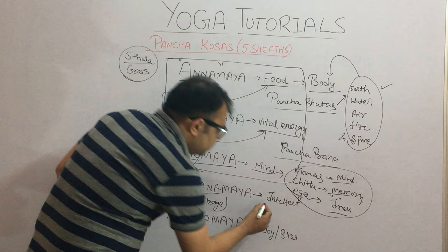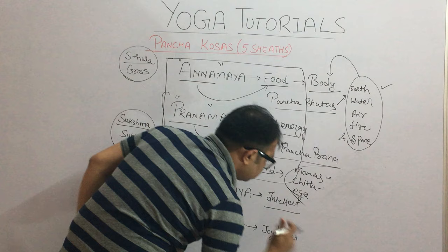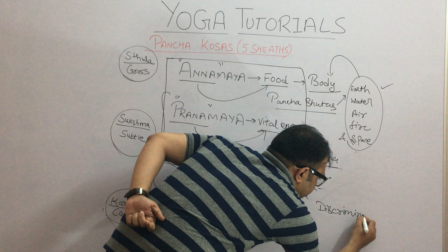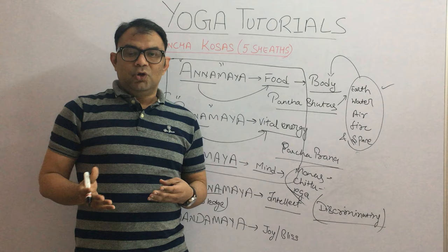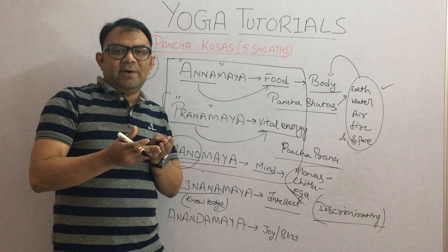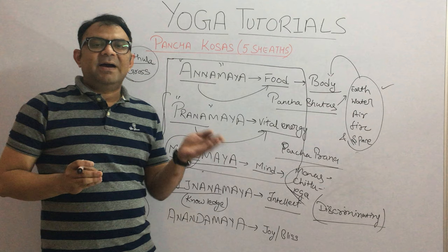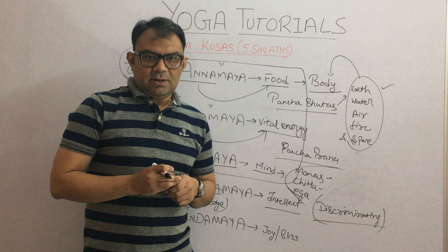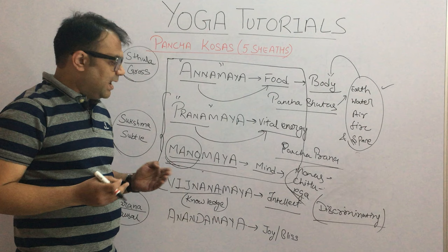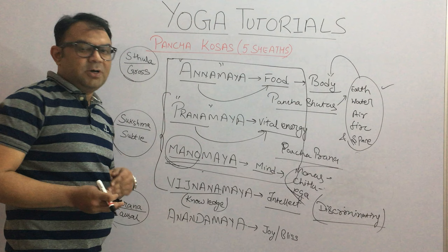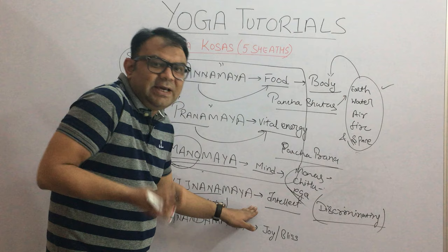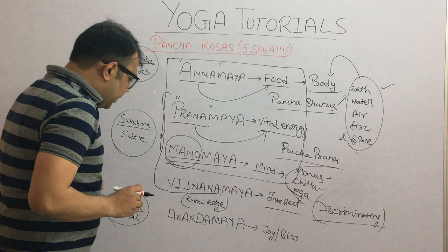The Vijnanamaya Kosha explains the discriminating faculty. For example, you have seen a flower, you like it and want it, but there is an intellect — a second level of mind — that tells you: no, if you pluck it, your neighbor or someone else might not like it. The things in your life which tell you what to do or not to do, what is right and what is wrong, come from the Vijnanamaya Kosha — the knowledge sheath that helps us discriminate between right and wrong.